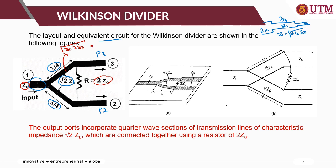Each transformer impedance is equal to root-2 times Z-naught. Each of these transformers is connected to a resistor with the value of 2 Z-naught. The function of this resistor is to dissipate the reflected power appearing at port 2 and port 3, and also to provide better isolation between port 2 and port 3. The two transformers help improve impedance matching between the input port and the output ports.